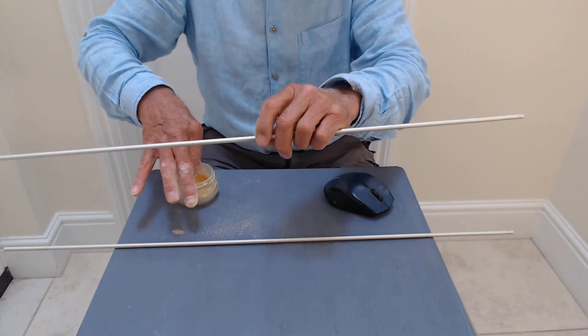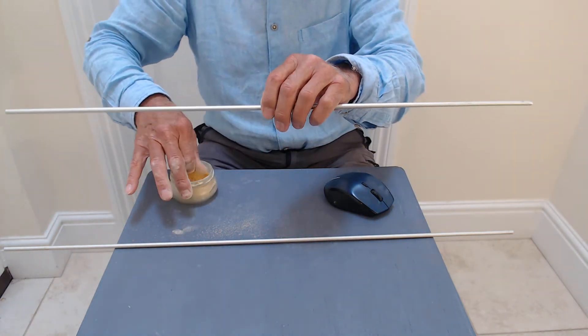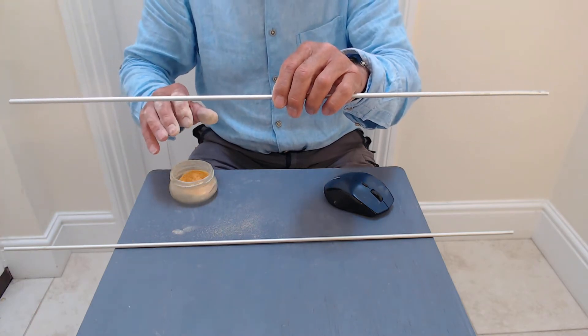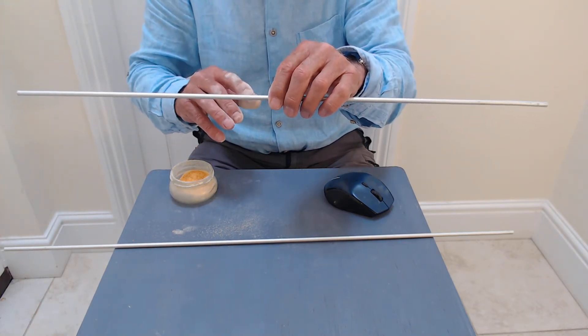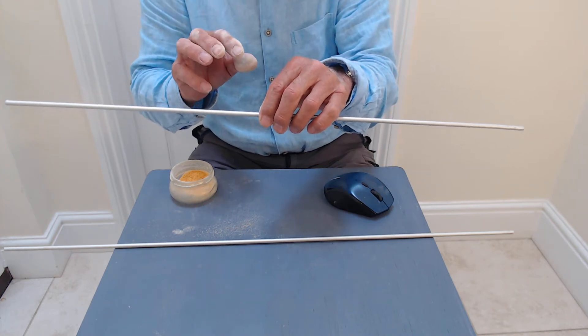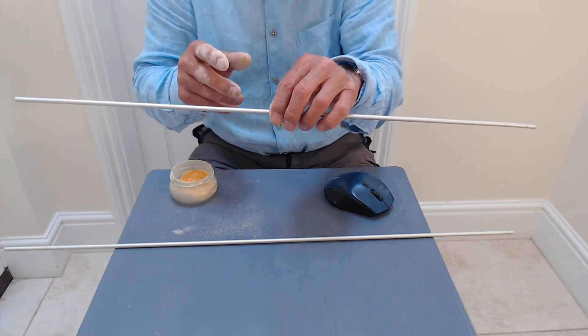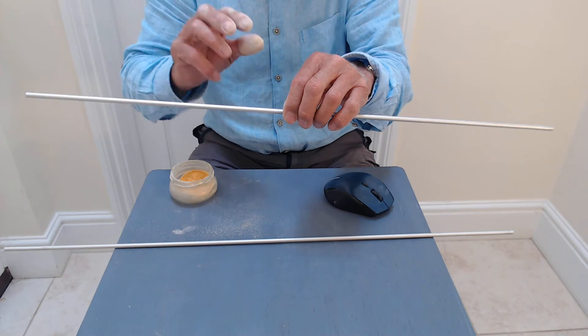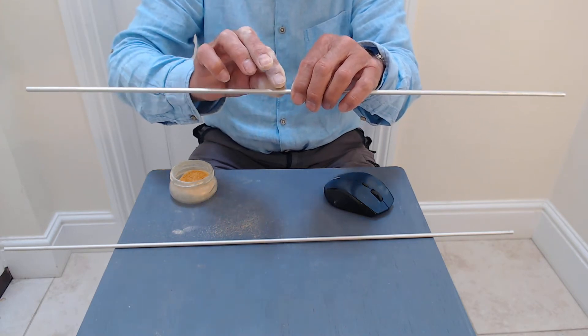Now I've got my fingers and thumb covered in rosin. Rosin, as many of you will know if you play a stringed instrument, is what you need to get friction between the bow and the strings. So I've now got my fingers well covered, so let's try.